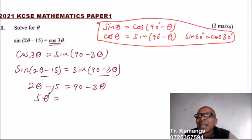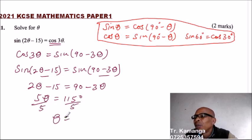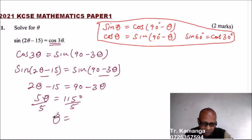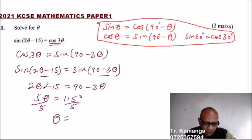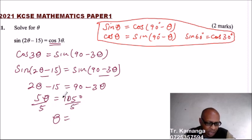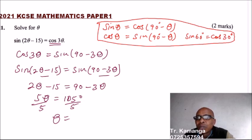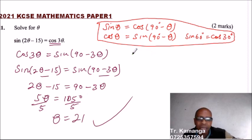We have 5θ equals 90 plus 15, which is 105 — not 115, correction noted. So 5θ = 105, divide both sides by 5, and θ equals 21 degrees.